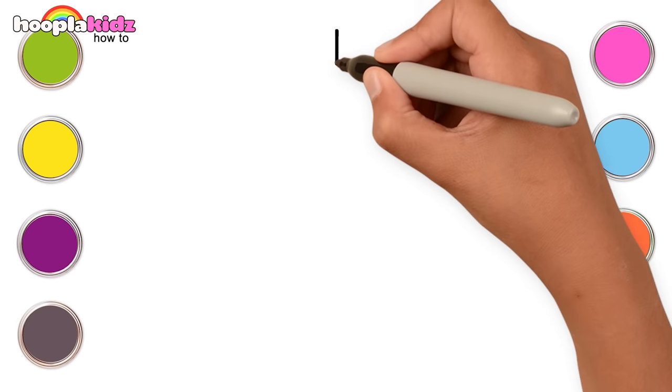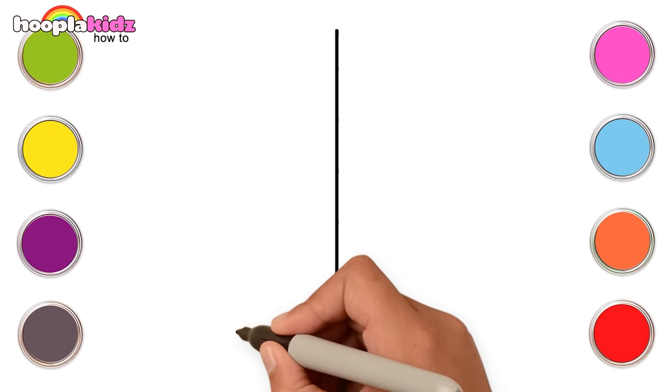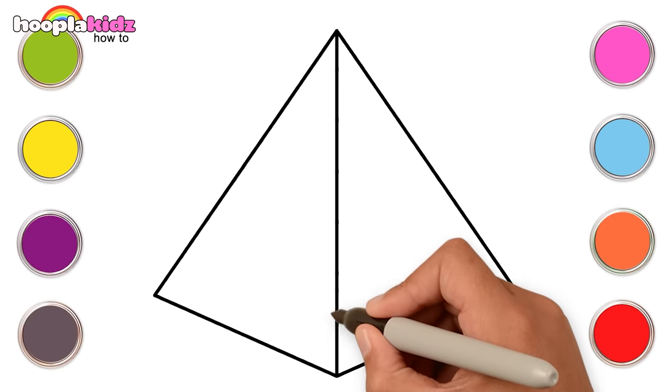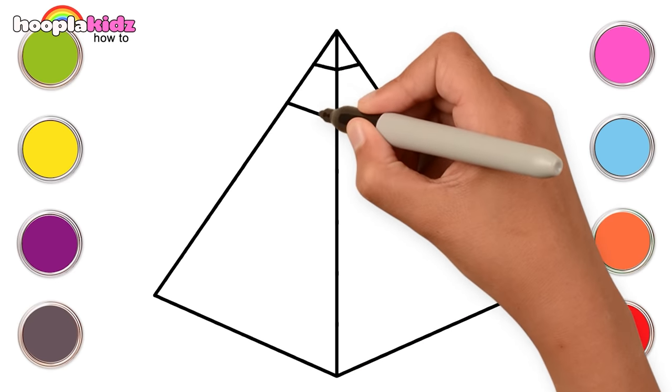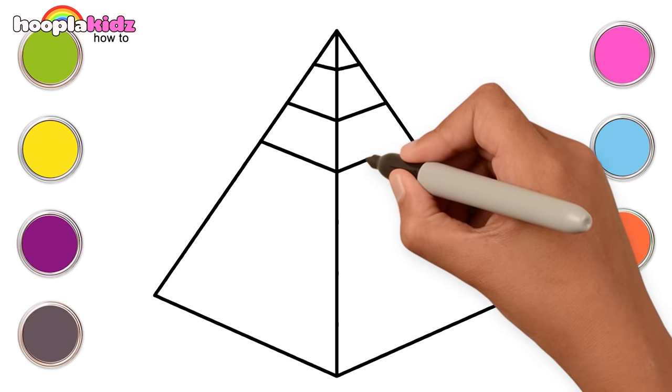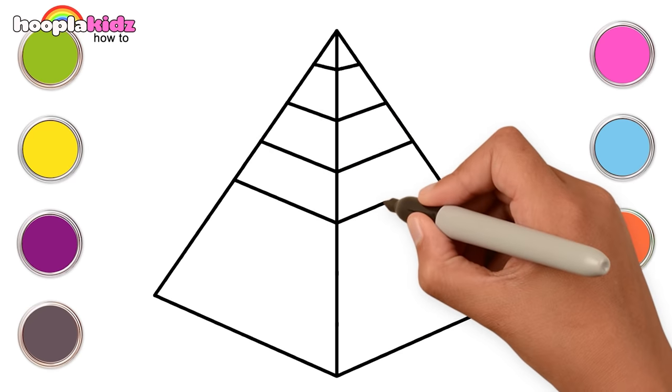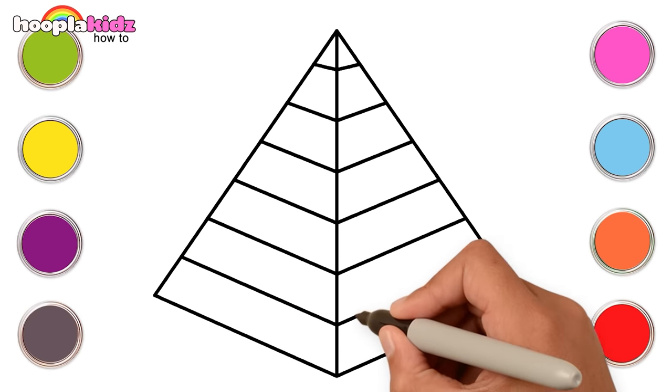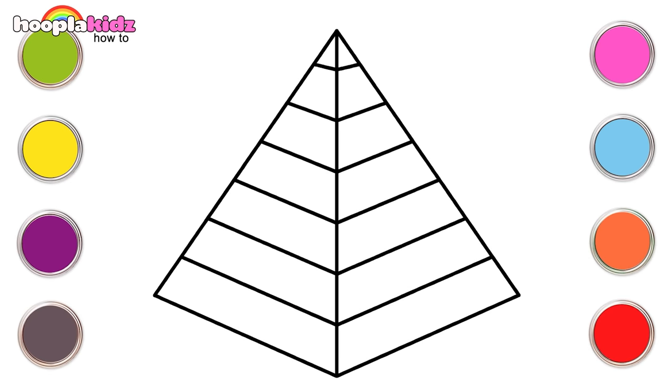Hi kids. Let's learn how to draw a pyramid. First start with a straight line, and then two triangles on either side. Now draw horizontal lines across both the triangles. And that's it. How easy was that? Time to paint.